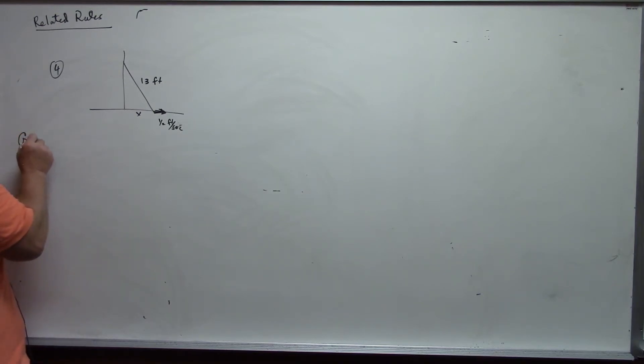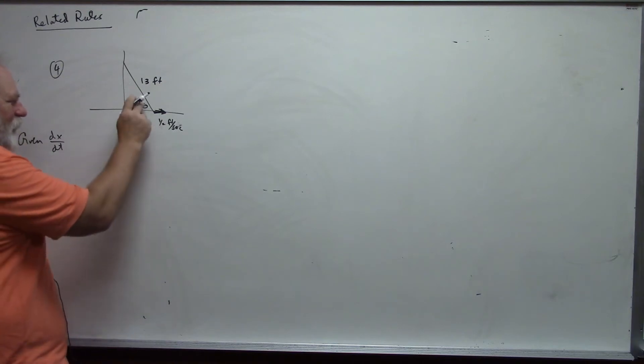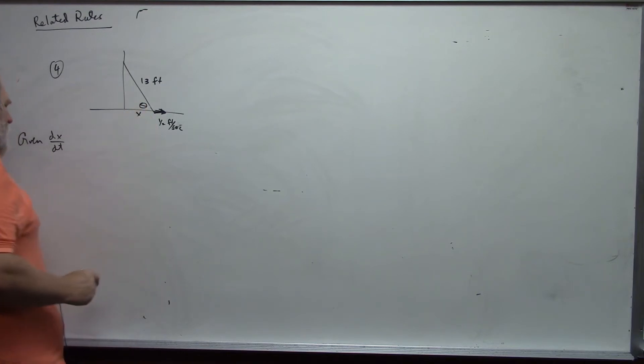In this case, I want to find the rate of change of the angle between the ladder and the wall. And I'm going to call that theta, if I can draw it. And so, we want to find d theta/dt. Those are my important variables.